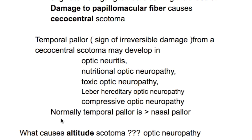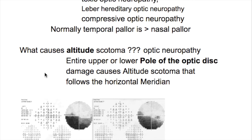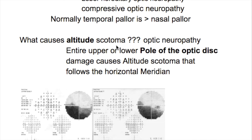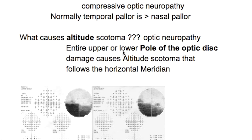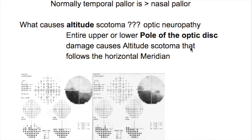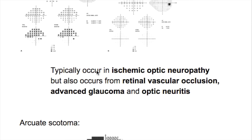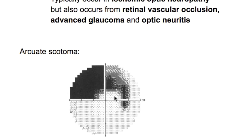It is important to note that normally temporal pallor is more than nasal pallor. The entire upper or lower pole of the optic disc damage causes altitudinal scotoma that follows the horizontal meridian. This typically occurs in ischemic optic neuropathy but also from retinal vascular occlusion, advanced glaucoma, and optic neuritis.